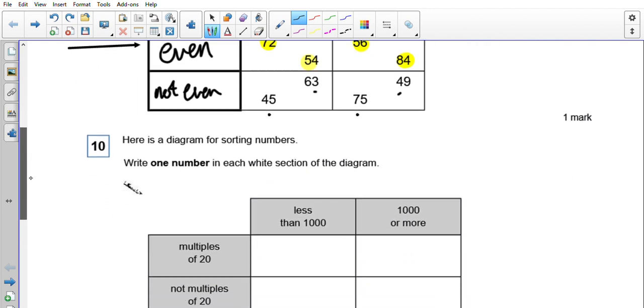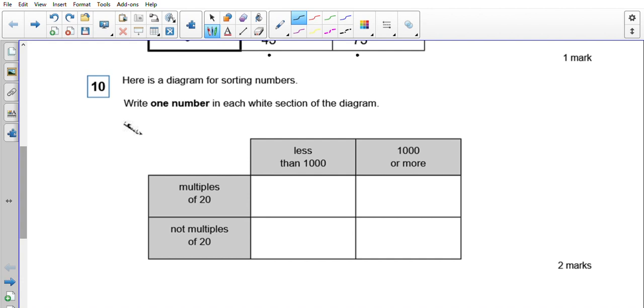Question 10 is a similar diagram for sorting numbers, but this time instead of labeling it, we need to come up with numbers which go in each one. I have a, b, c, and d essentially. If I think about the properties of a, well a is going to have to be less than 1000 and a multiple of 20. So be as straightforward as possible with it. A multiple of 20 that's less than 1000 is 20. Don't need to do anything just smart with it.